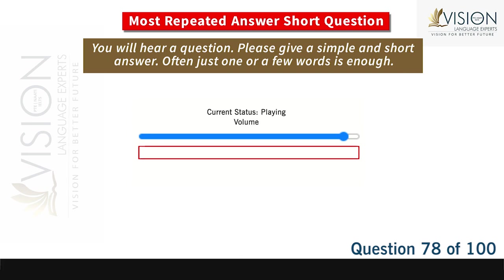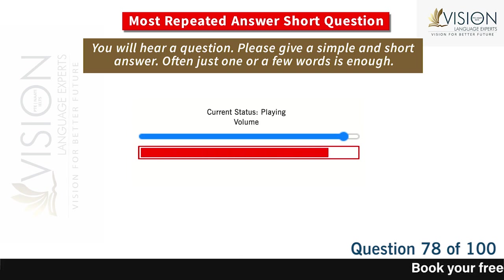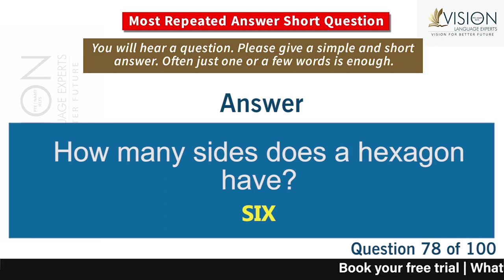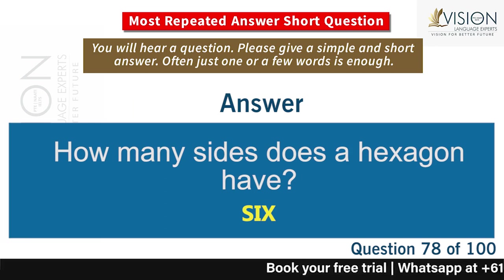How many sides does a hexagon have? Six.